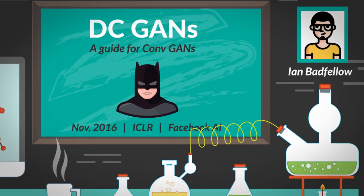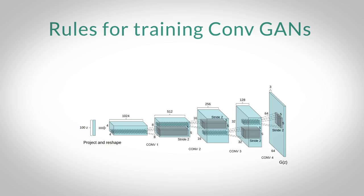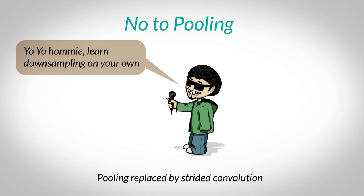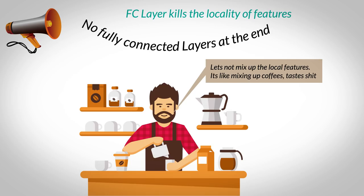DCGANs is a paper which talks about guidelines to train a convolutional GAN. These guidelines are: a) Replace pooling with strided convolution in discriminator and fractional strided convolution in generator. The author's point is that let the model learn its downsampling, rather than us shoving it down the throat via pooling or static selection. b) Eliminate the fully connected layers on the top of convolutional layers, because they mix up the locality of features, which makes it very difficult to discriminate.